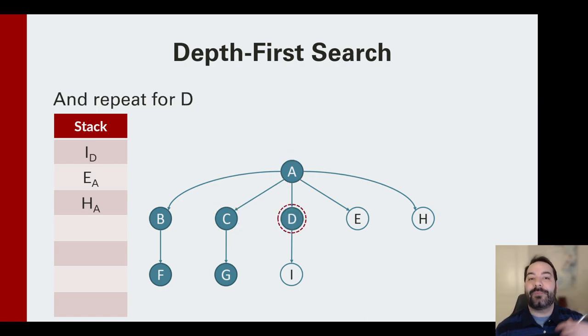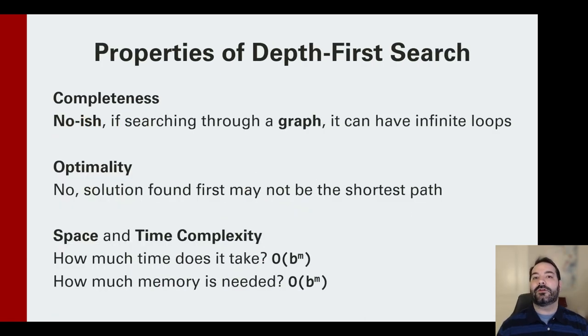We repeat the process over and over again. I'll spare you going through it again. But when we look at those properties now, we ask some questions. Is the depth-first search a complete search? That's where we get into a little bit of an issue because technically speaking, a depth-first search could lead to infinite loops.